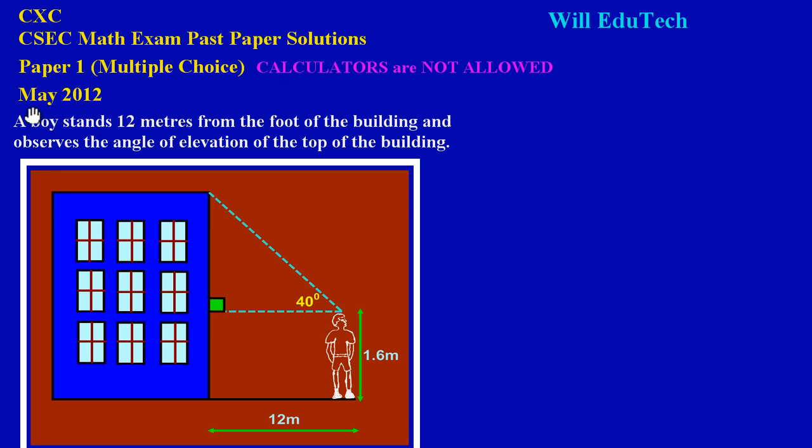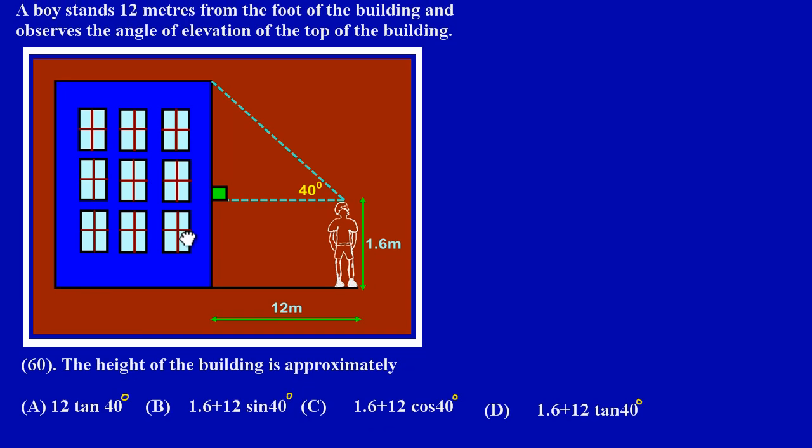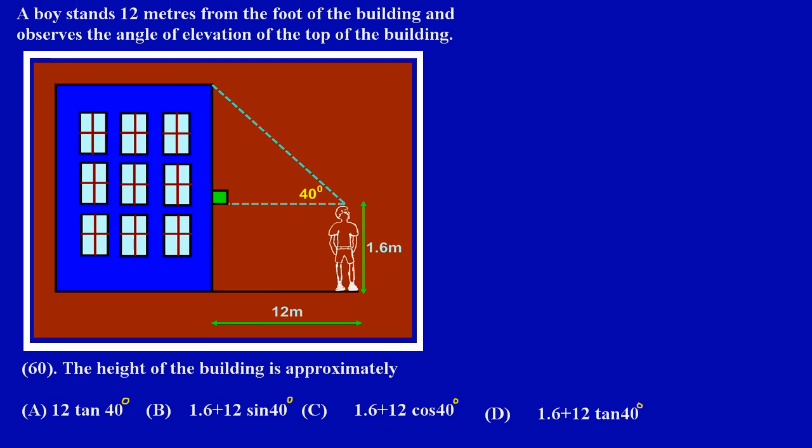Before we get into it, let's pull this up so that we can have the question in its entirety. I think that should be good enough. Now here it states a boy stands 12 meters from the foot of the building and observes the angle of elevation of the top of the building.